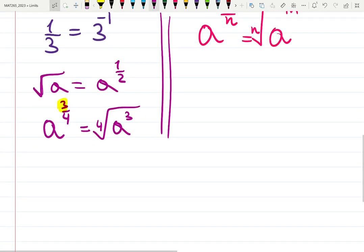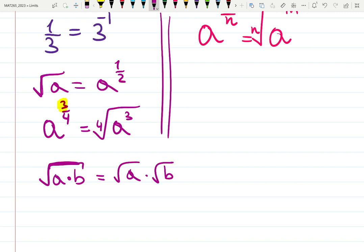One more thing to review is square root of a times b is square root of a times square root of b, or both are 1 halves: a to the 1 half, b to the 1 half. Those are the notations and rules.